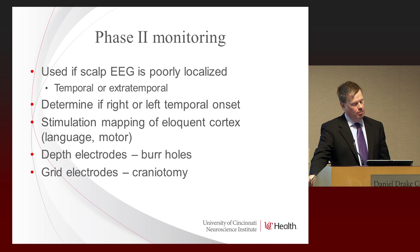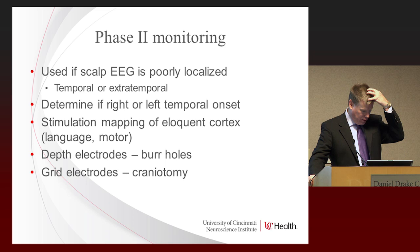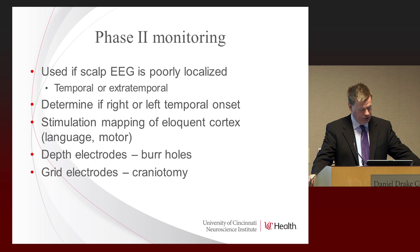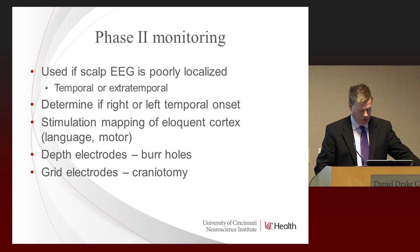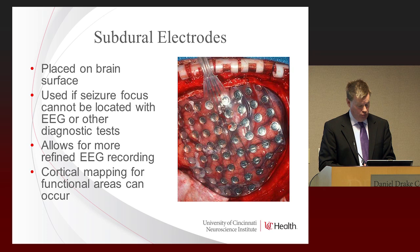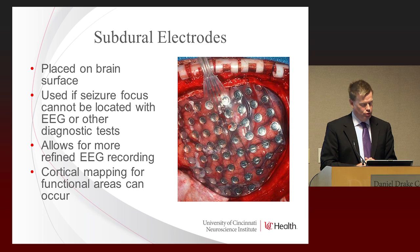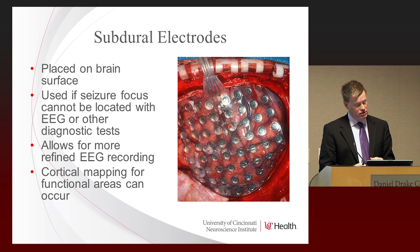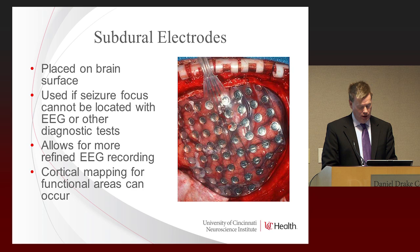An additional tool when evaluating someone for epilepsy surgery is phase two monitoring. Many times scalp EEG recorded on the skull is enough, but if we have conflicting information, we might do phase two monitoring where we surgically implant electrodes over the brain to better pinpoint where the seizures are coming from. This is an example of a grid — 64 electrodes placed over the surface of the brain. We record seizures and determine which electrodes produce the seizure onset, then do mapping to determine if the seizure focus is near important areas like motor control, speech, or language.